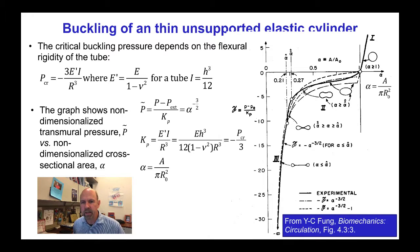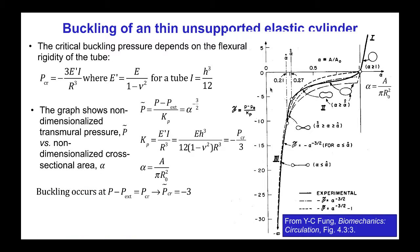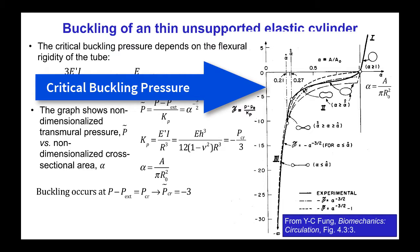You can see that the critical buckling pressure on the normalized scale will be p̃ of minus 3 — so right about here.